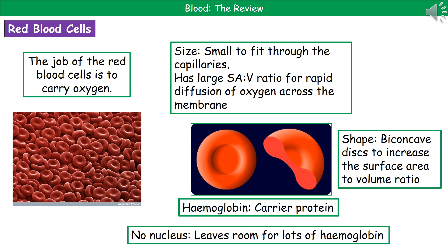They've also got a very special shape called a biconcave disc shape, and the whole purpose behind that is to increase the surface area to volume ratio. You can see what we mean by biconcave disc if you look at the little picture there — it's basically like those Refreshers or Parma Violet sweets. Inside our red blood cells, we've got a special protein called haemoglobin, which is a carrier protein, and it's to that haemoglobin that oxygen joins to be carried around the body. To make as much space for that haemoglobin as possible, the red blood cells have no nucleus, so they can be packed full of haemoglobin to transport more oxygen.